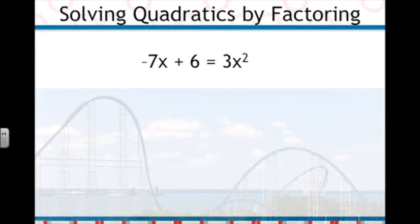Even though there are two terms on the left and only one on the right, remember we want to keep the 3x squared positive, so we're going to leave it there on the right and add 7x to both sides, then subtract 6 from both sides to get 0 equals 3x squared plus 7x minus 6.